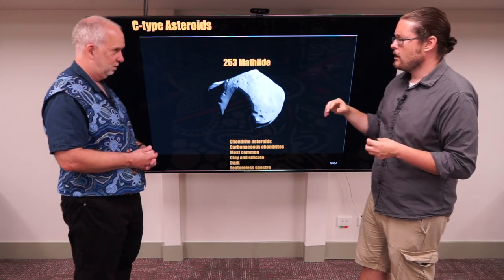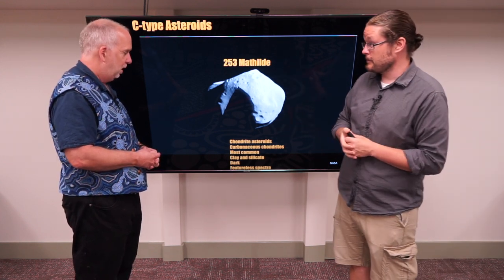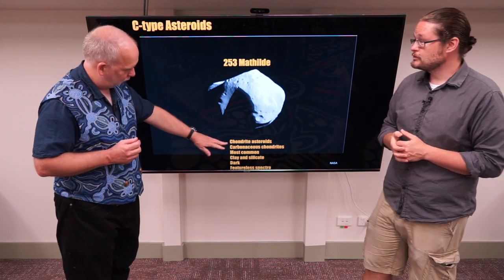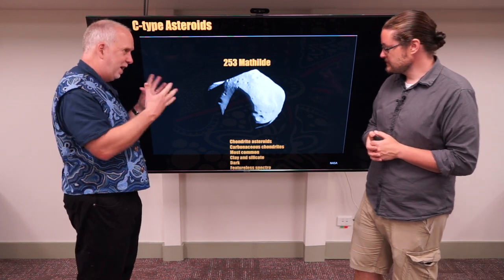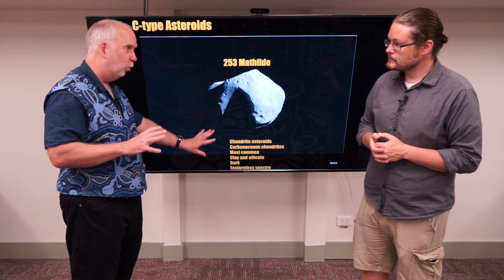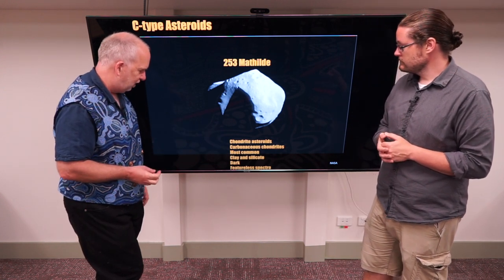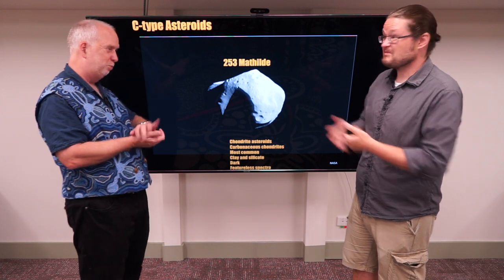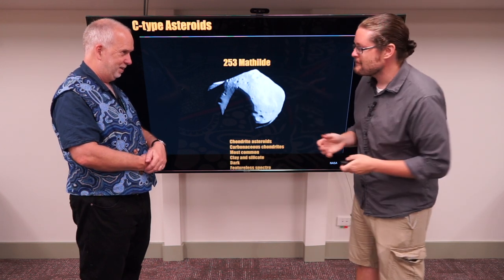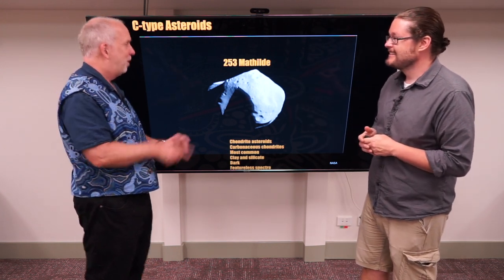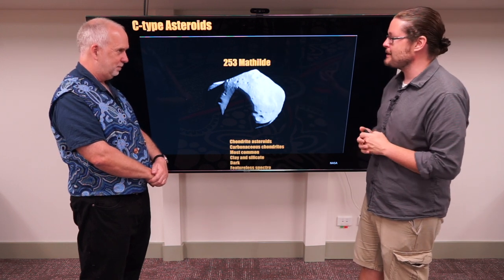C-type asteroids are the majority of asteroids out there. They're the chondrites — the carbonaceous chondrites — which are quite useful in some cases. These are perhaps the oldest, least modified, and they're very common. They're a mixture of clay and silicon, very dark on the surface, and the spectrum of light reflecting off them is pretty featureless. So one of the ways we identify them is by not finding much when we look at the spectrum — C-type. Which is perhaps why they're the most commonly observed, though there are issues with how far away they are.